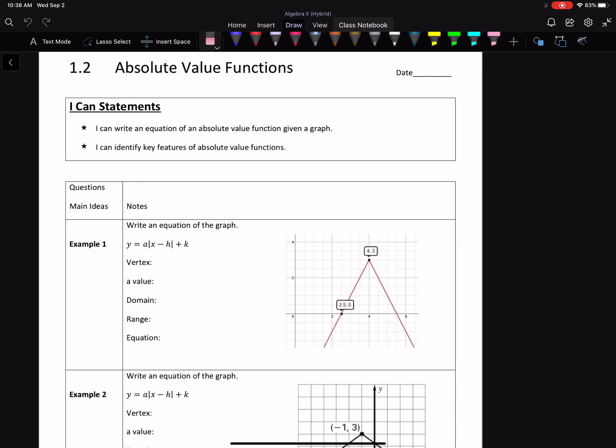Alright, here we go. Unit 1, Section 2, Absolute Value Functions. So in the last section, we looked at graphing absolute value functions. In this section, we're going the other way. We're given a graph, we have to write the equation.